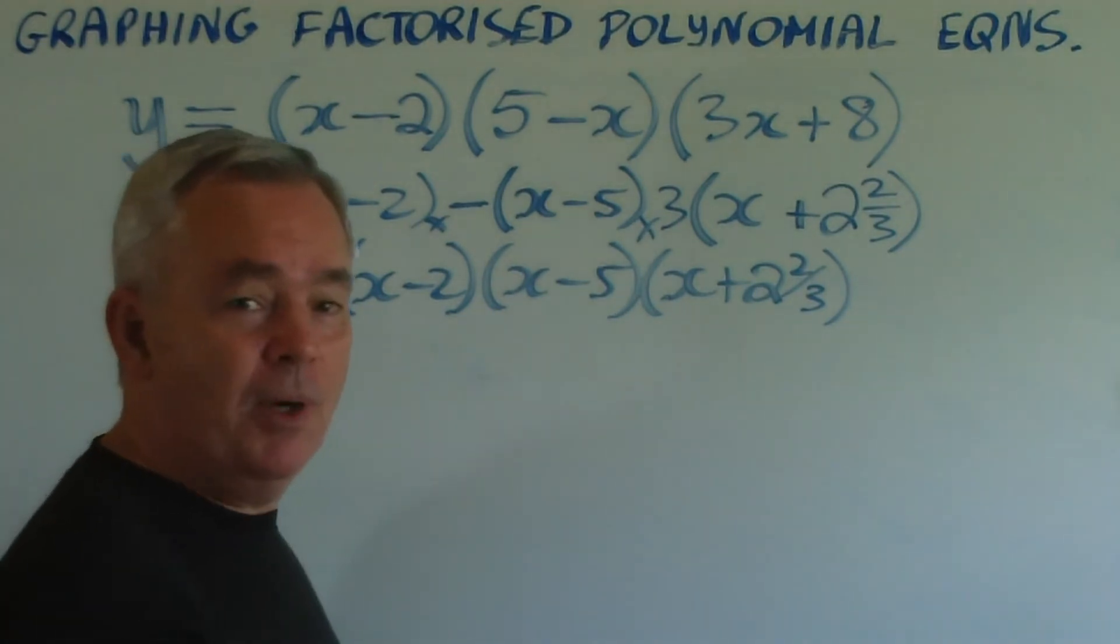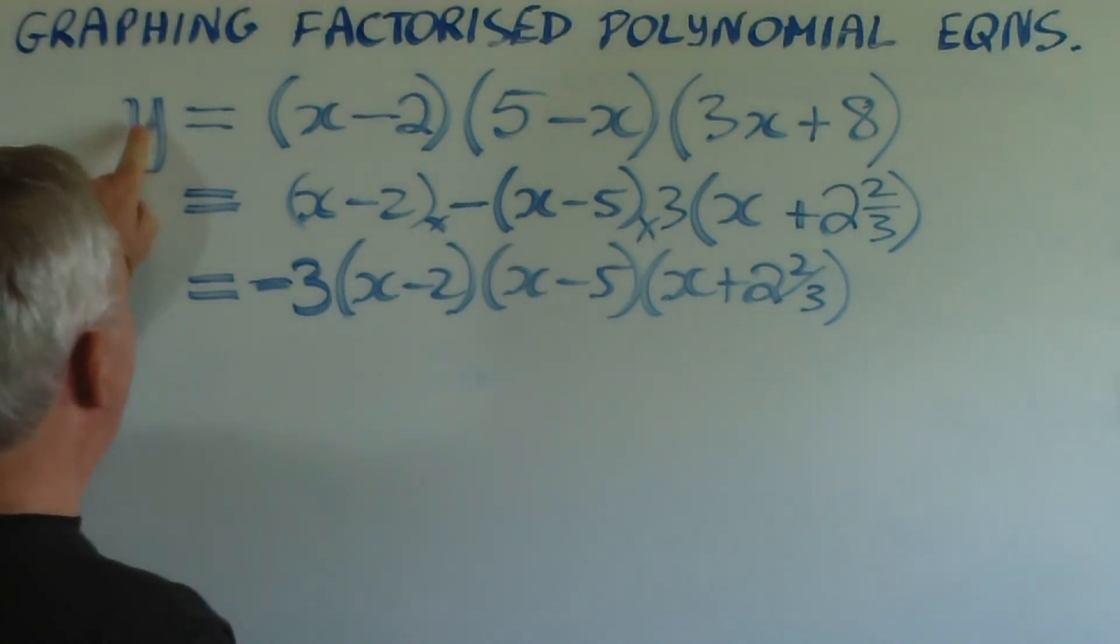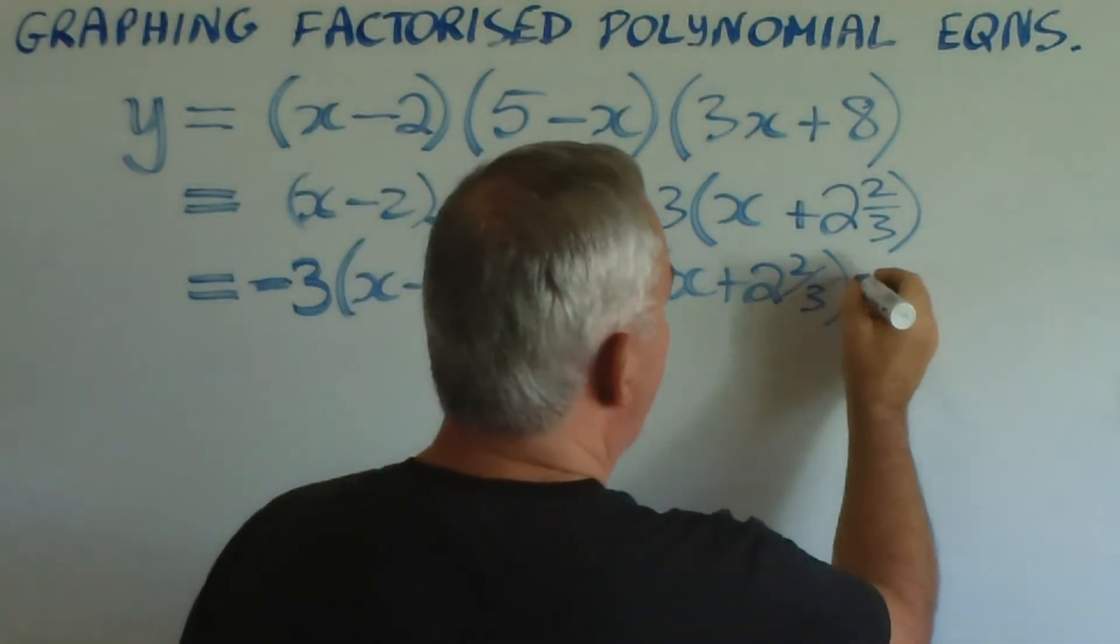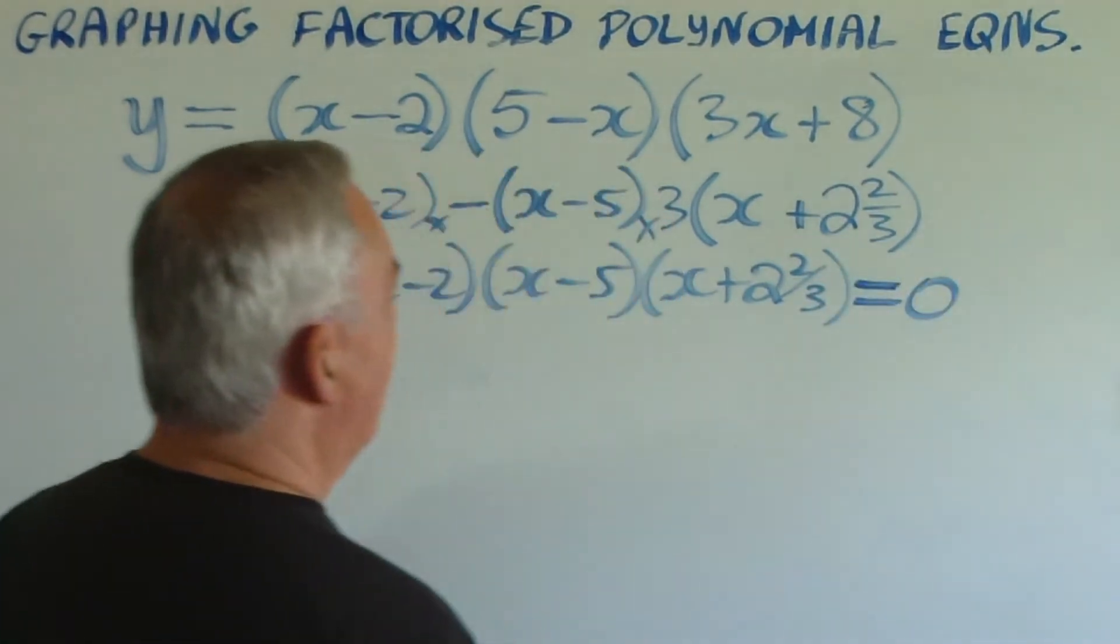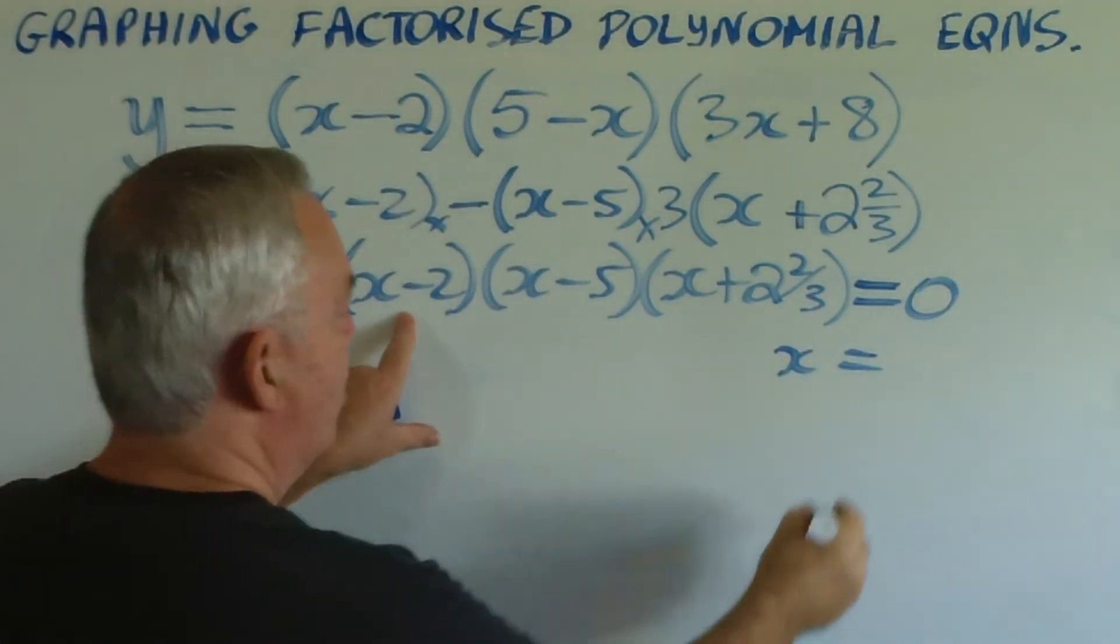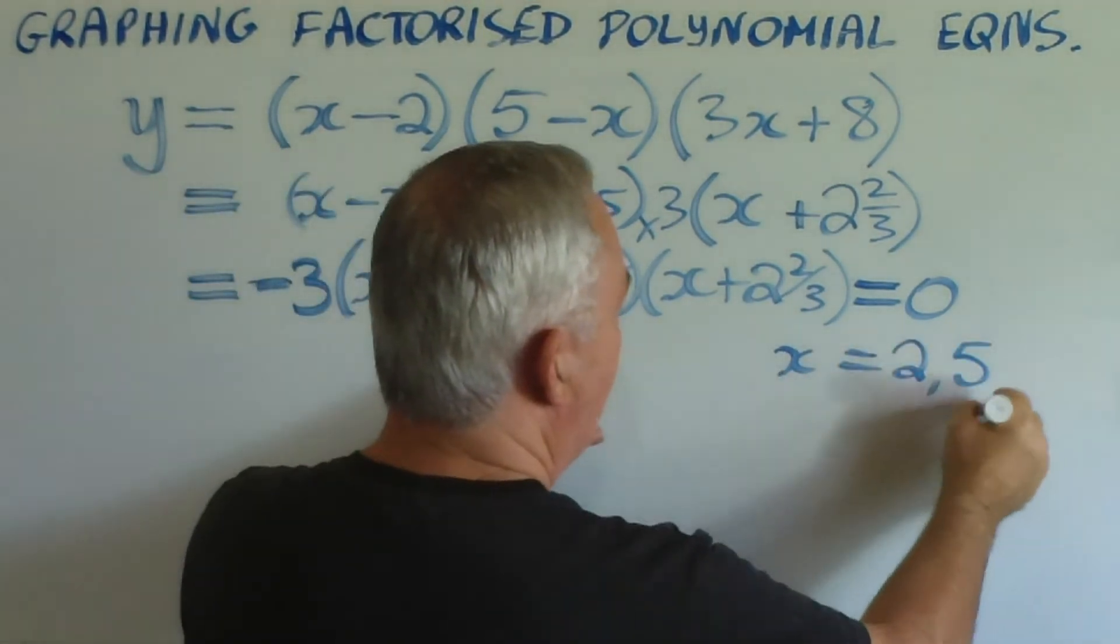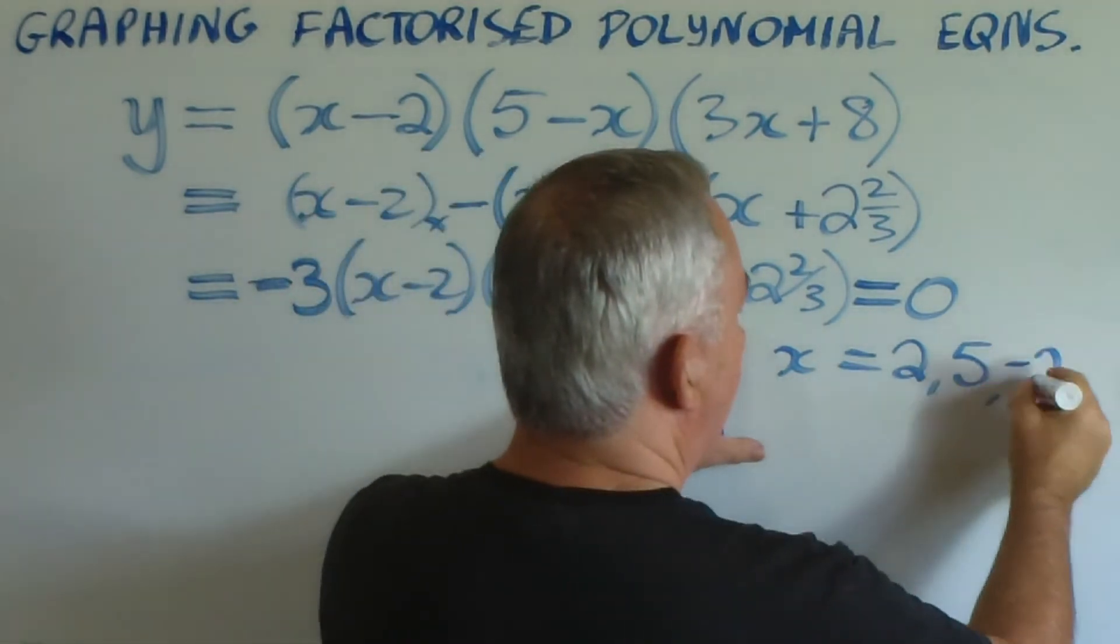Well, I hope you know by now, but let's draw this graph. To find its roots, we set y equal to zero. We can then determine the three roots. There will be a root at plus 2, a root at plus 5, and a root at minus 2 and 2 thirds.